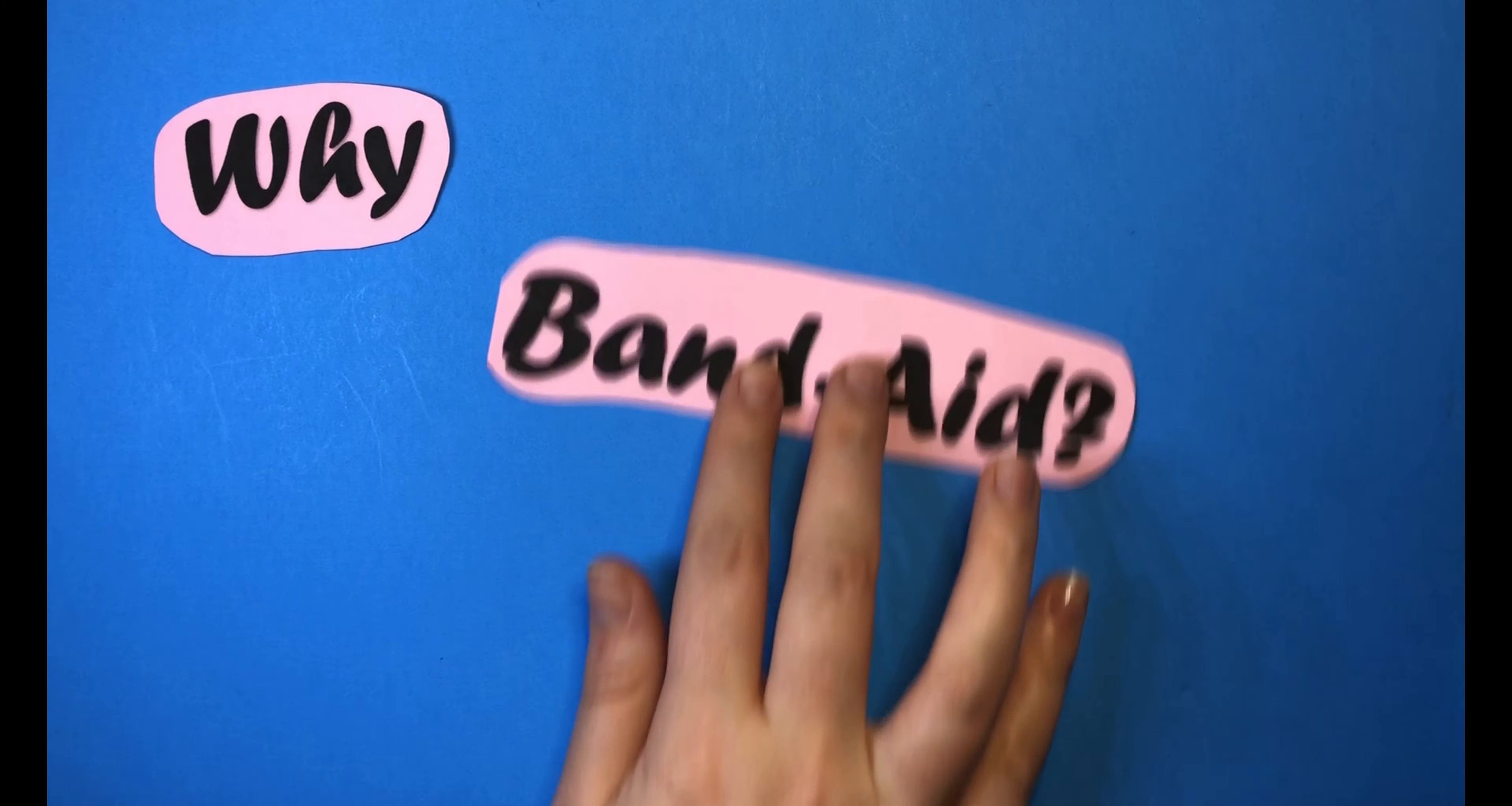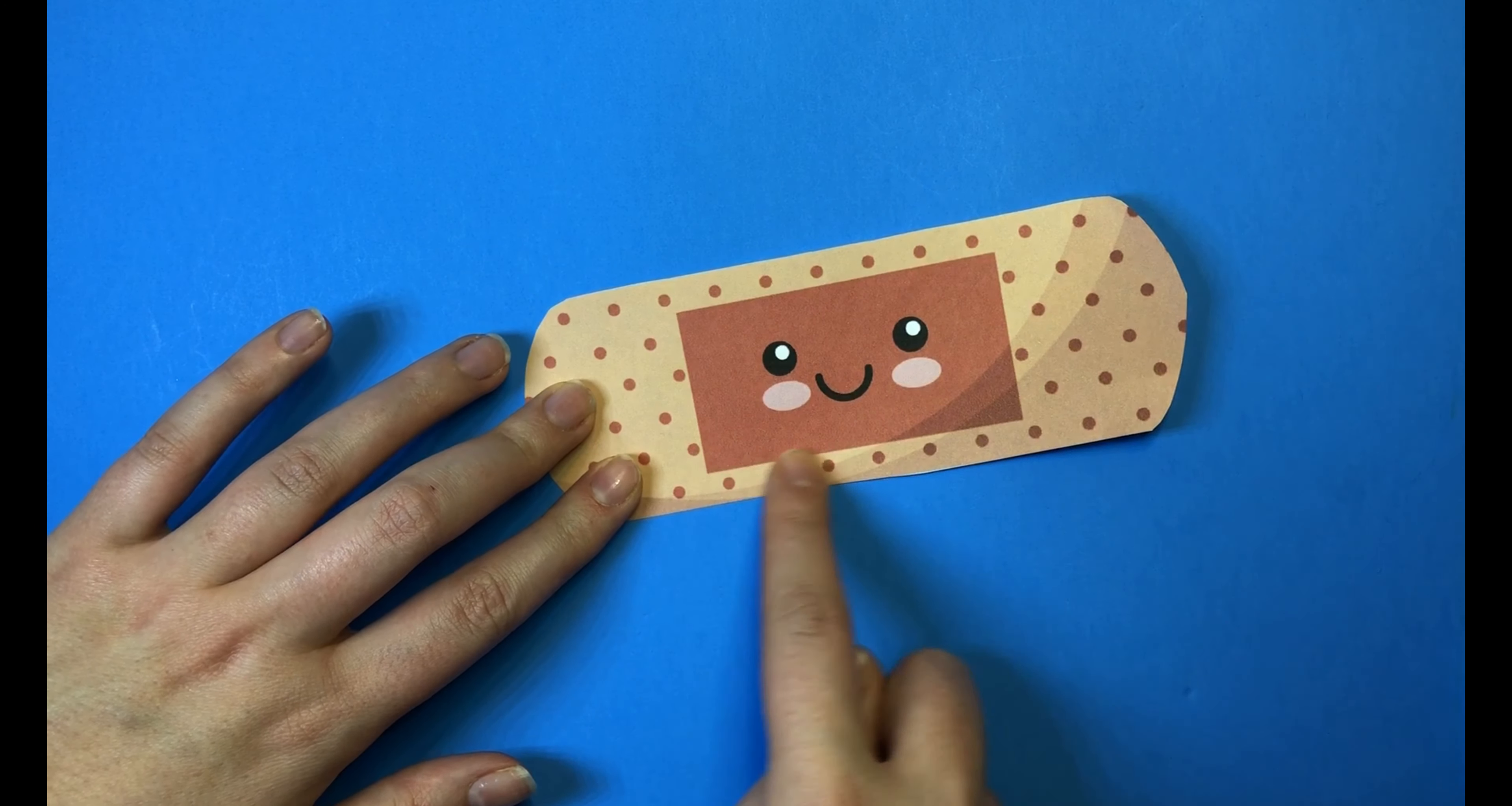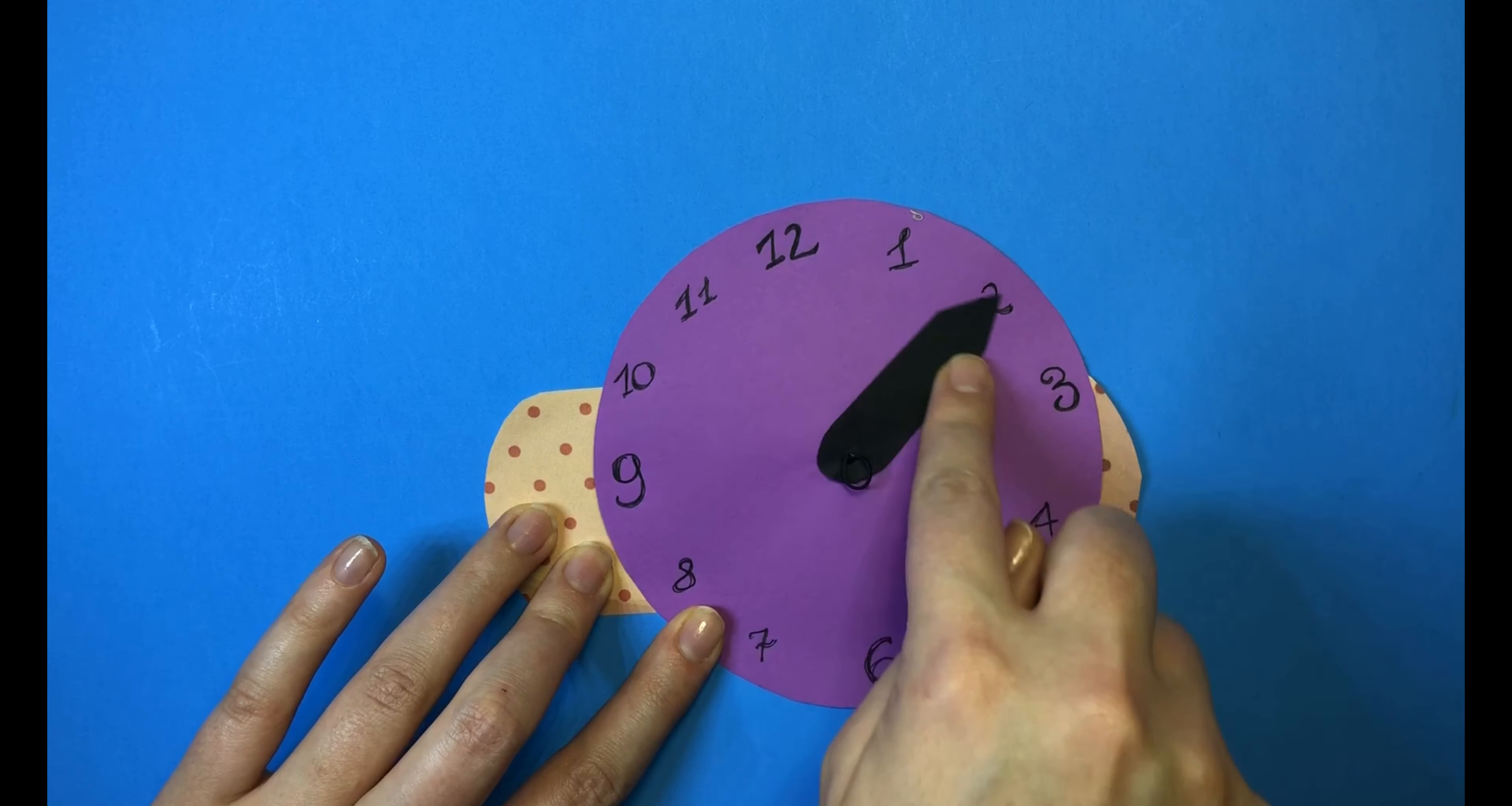Why Band-Aid by Johnson & Johnson? Because it has a non-stick pad that won't stick to your wound and will allow gentle removal. Band-Aids come in assorted sizes, designs, and colors for anybody's needs, and their super stick adhesion will stay longer than other brands.